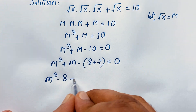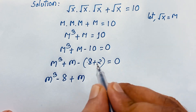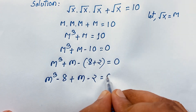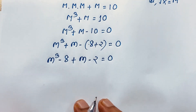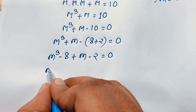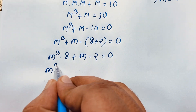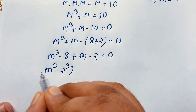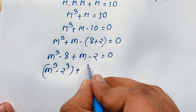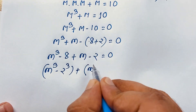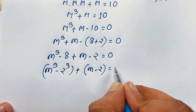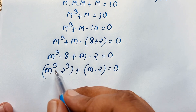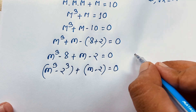So we rewrite this as m³ minus 8, plus m minus 2, equals 0. Note that 8 equals 2 to the power 3. Now I will apply the identity a cubed minus b cubed.